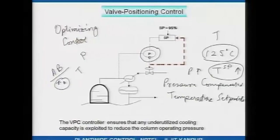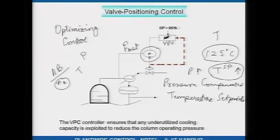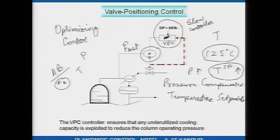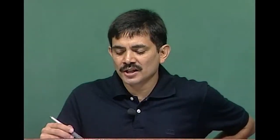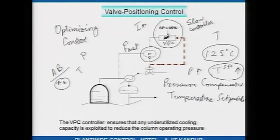Another thing to highlight: this pressure controller is fast — tuned for a fast and snappy response — while this valve positioning controller would be tuned for a very slow response. What that means is you do not want to change the pressure set point too quickly. You change the pressure set point slowly but surely, and the pressure controller action causes the cooling water valve to open. Since it is supposed to be a slow controller, many valve positioning controllers are integral-only — just a slow integrator.